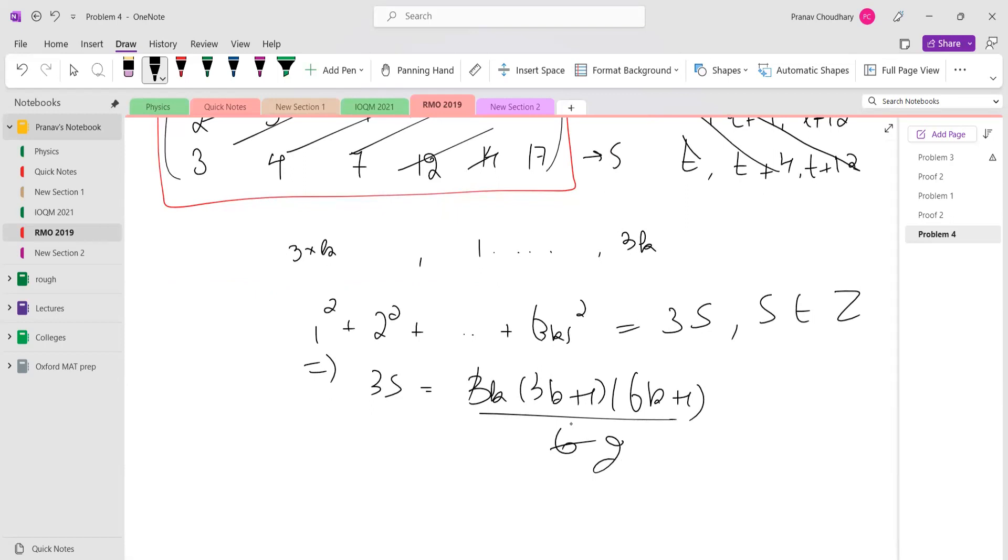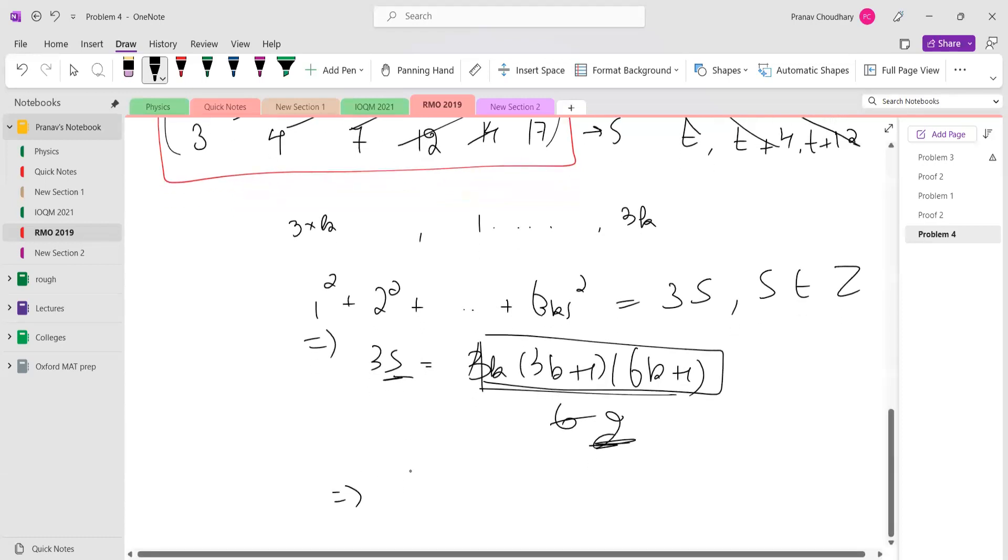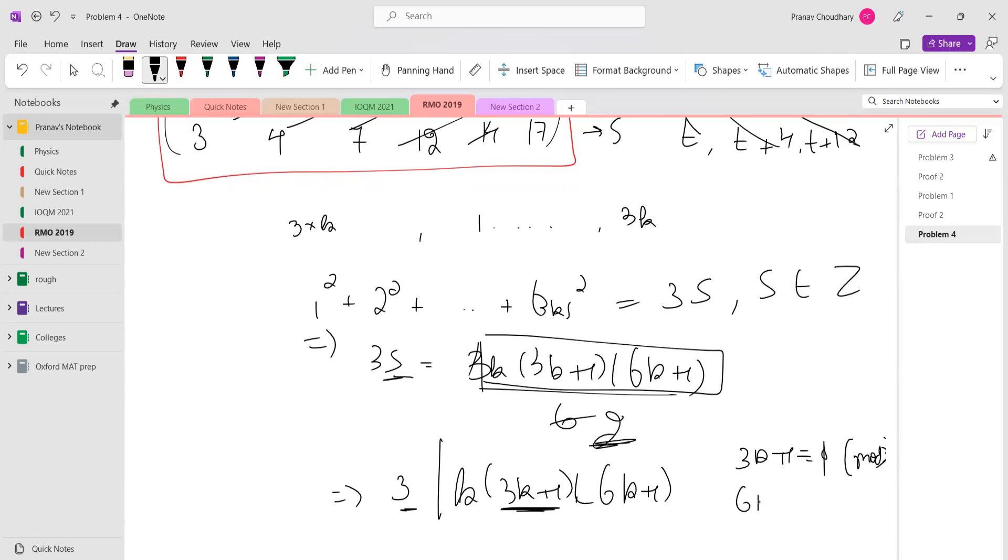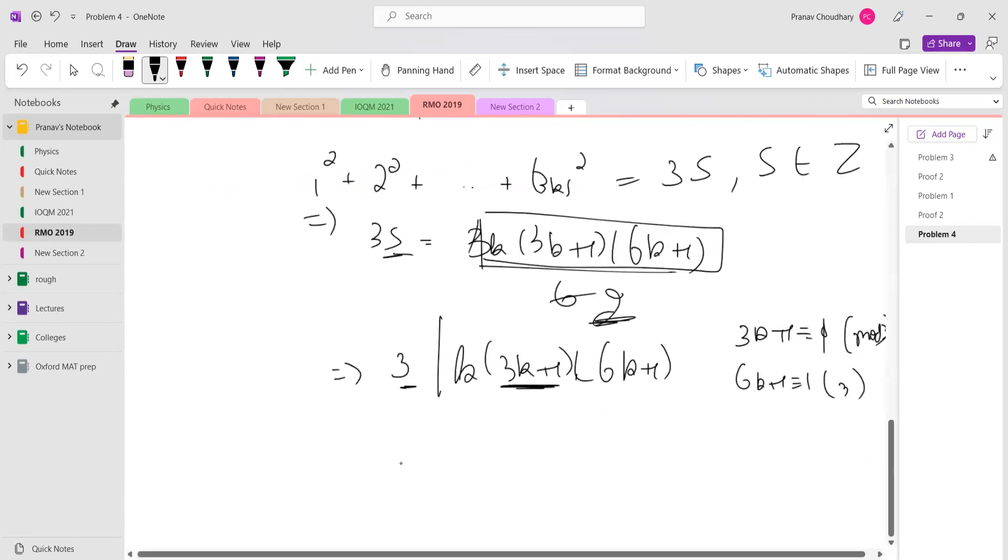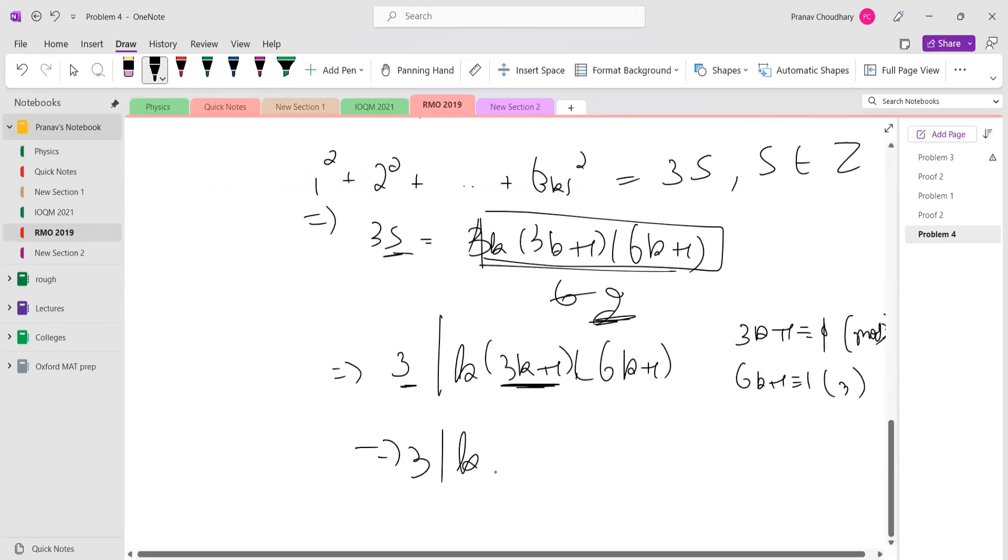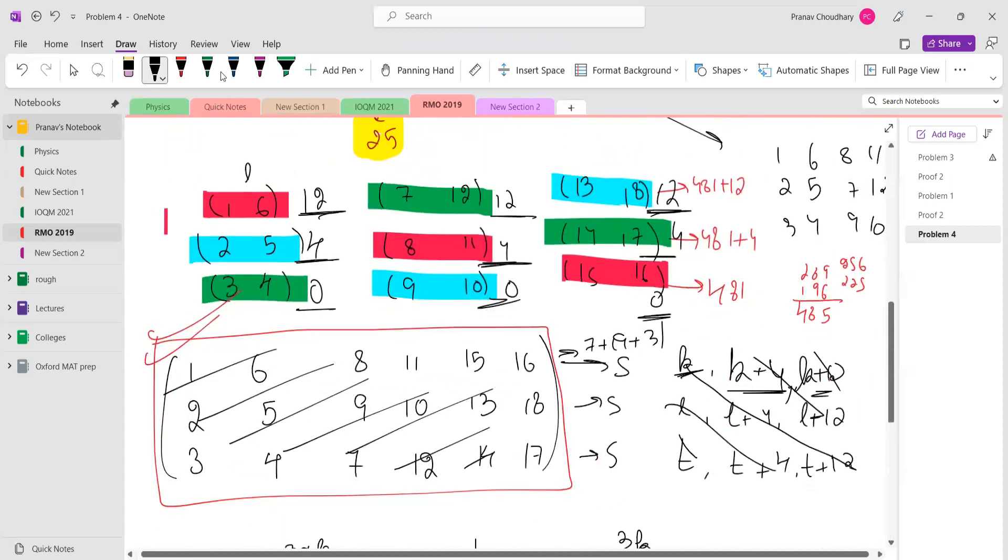If k is even, this thing is divided by 2, so we can ignore 2 for now. The point is: since S is an integer, 3 should divide k × (3k+1) × (6k+1). But 3 cannot divide 3k+1 because 3k+1 is congruent to 1 mod 3. Similarly, 6k+1 is also congruent to 1 mod 3, which means 3 must divide k.